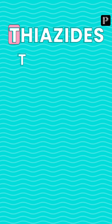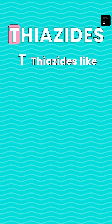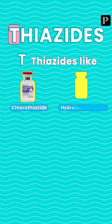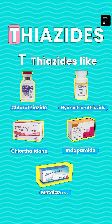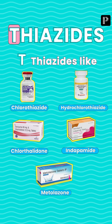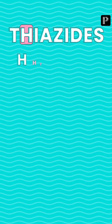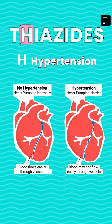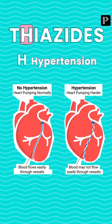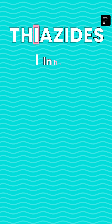The first letter is T — T stands for thiazides, like chlorothiazide, hydrochlorothiazide, chlorthalidone, indapamide, and vedalosol. The next letter is H — H stands for hypertension. For hypertension, thiazides are the first choice.